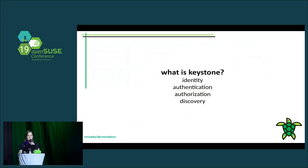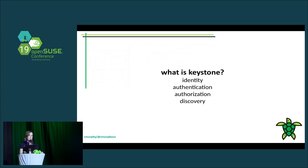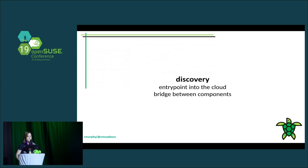So with that in mind, this is what Keystone is. It implements the identity API for OpenStack, which means it's responsible for user management, as well as for authentication and authorization within OpenStack. And then since it's central to all the other components of OpenStack, it also acts as a discovery service. I'm going to talk about that functionality first because it's kind of the odd one out.